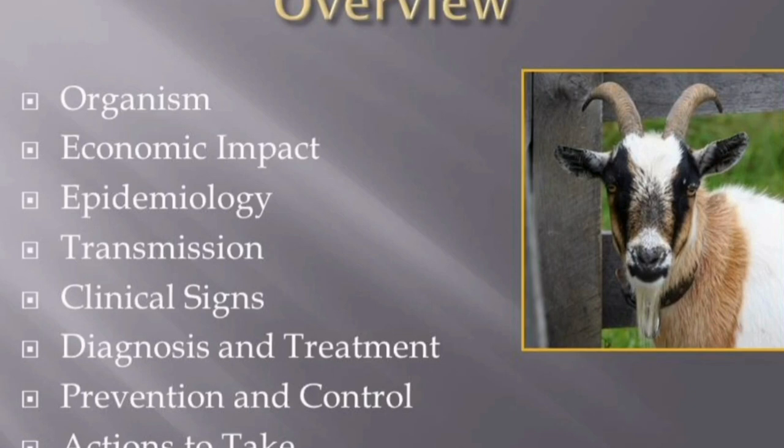We'll also talk about the economic impact the disease has had in the past and could have in the future. Additionally, we'll talk about how it is transmitted, the species it affects, clinical signs and necropsy findings, and diagnosis and treatment of the disease. Finally, we'll address the prevention and control measures for this disease as well as actions to take if Contagious Caprine Pleuropneumonia is suspected.